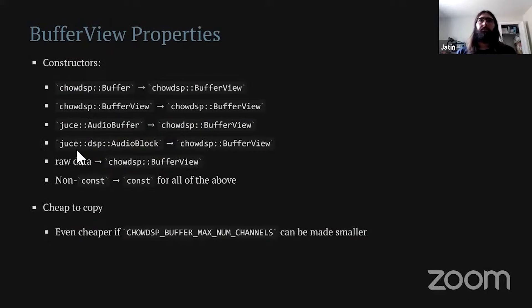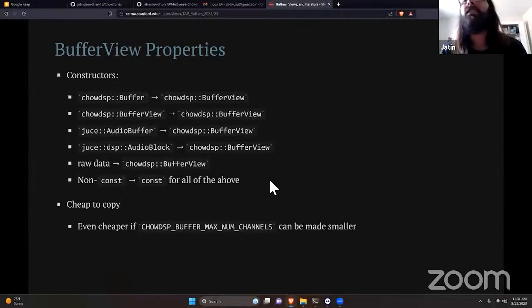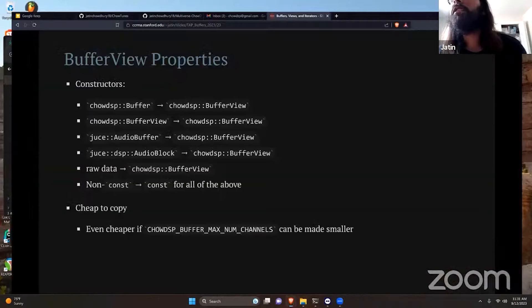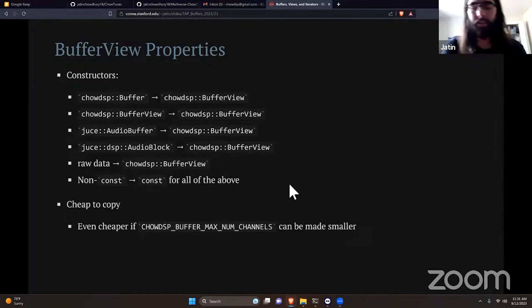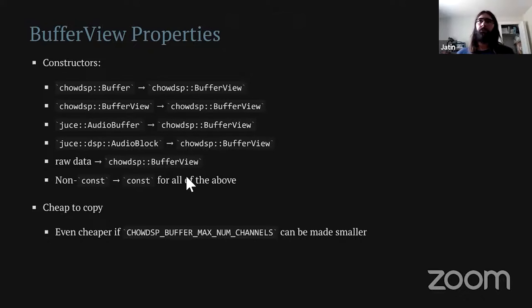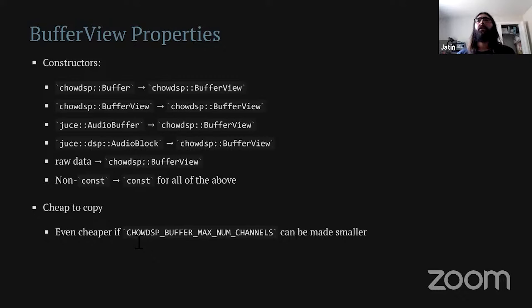I set up a bunch of constructors that allow for the same sorts of implicit conversions as with std::span. If you have a buffer, you can create a buffer view. If you have a buffer view, you can create another buffer view — for example if you need to resize, you just create a new buffer view from your old one with different dimensions. Since I use JUCE, I have conversions from JUCE AudioBuffer and AudioBlock into a buffer view, as well as from raw data. And from any non-const data structure you can make a const buffer view.